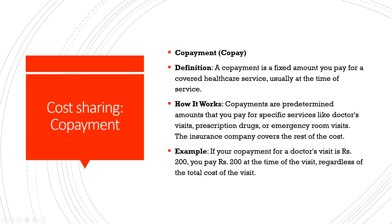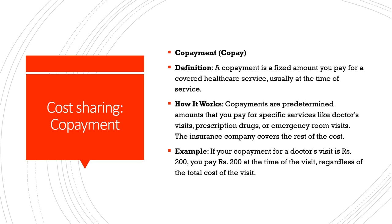Co-payment, on the other hand, is a fixed amount that I have to pay for a covered healthcare service, usually at the time of service. Co-payments are predetermined amounts paid for specific services like doctor's visits, prescription drugs or emergency room visits, and the insurance company covers the rest of the cost. For example, if my co-payment for a doctor's visit is rupees 200, I pay rupees 200 at the time of the visit regardless of the total cost, and the rest is paid by the insurance company. These are two effective ways of cost sharing, bearing in mind the impact on the final demand for insurance in the context of moral hazard.